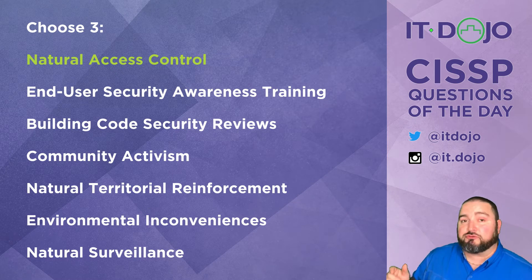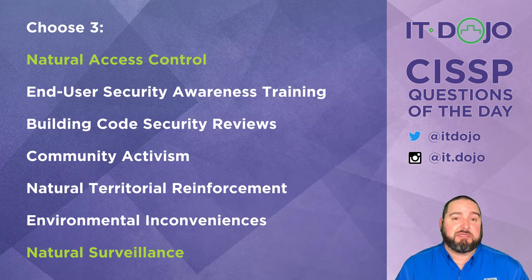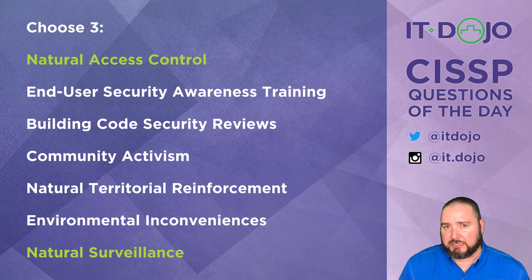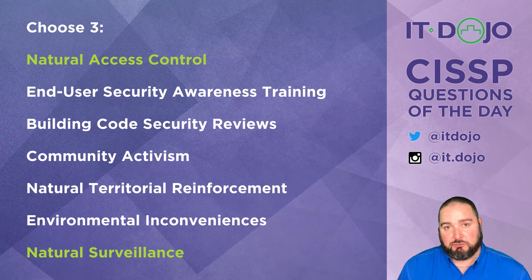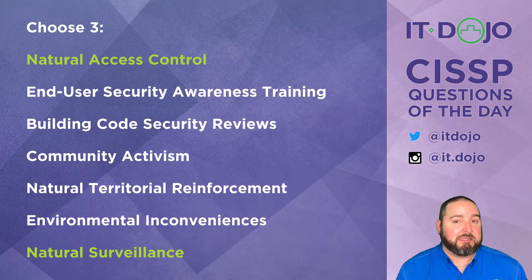The next good answer is natural surveillance. What natural surveillance endeavors to do is create a situation where people feel like if they do something, they're going to be seen doing it. In the psychology of crime, a lot of times people choose to do things — particularly vandalism-related things — based not necessarily on the reward, but on whether or not they feel like they'll get seen or caught. By creating a natural surveillance environment, it decreases the likelihood that they're willing to do something inappropriate.